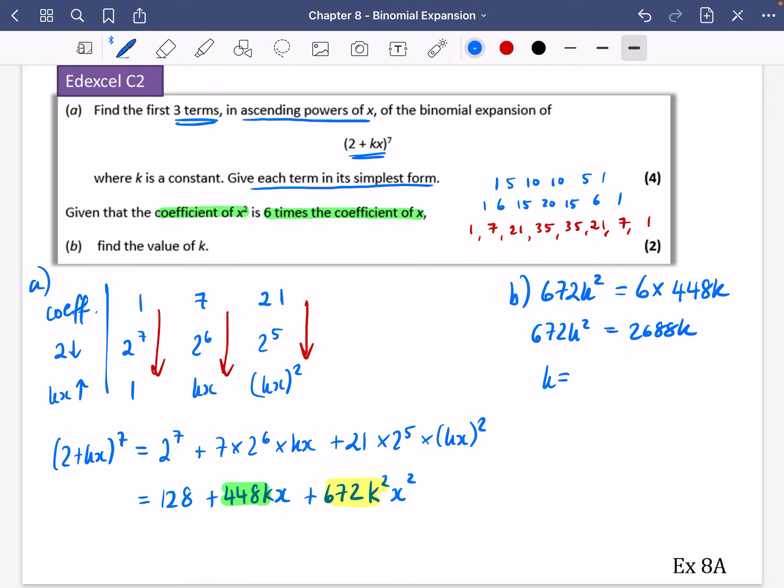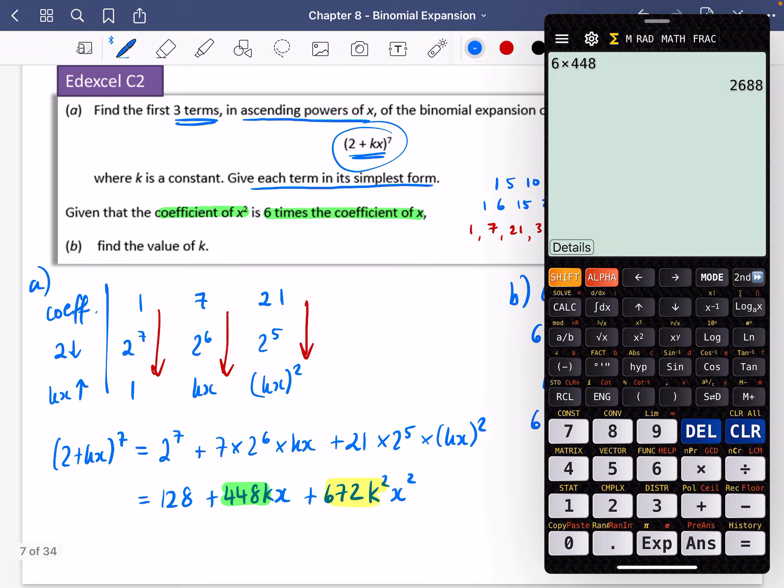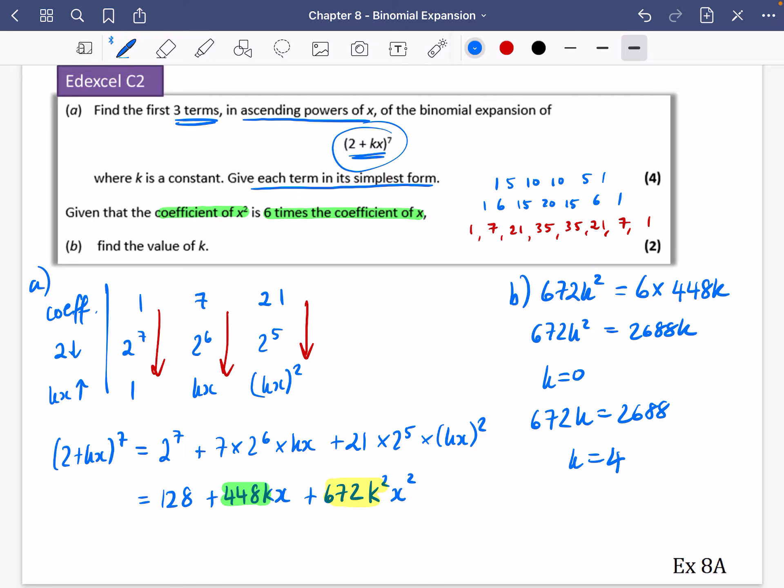Now clearly k could be equal to 0 in this case. But that's not going to really apply for this question. Because we're just then doing 2 to the power of 7. So let's divide both sides by k. So we get 672k equals 2688. So I'll do 2688 divided by 672. And we get the answer. That k is equal to 4.